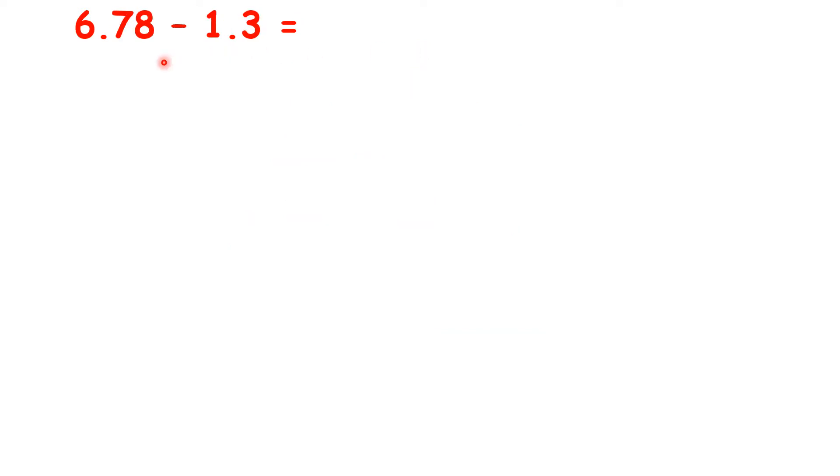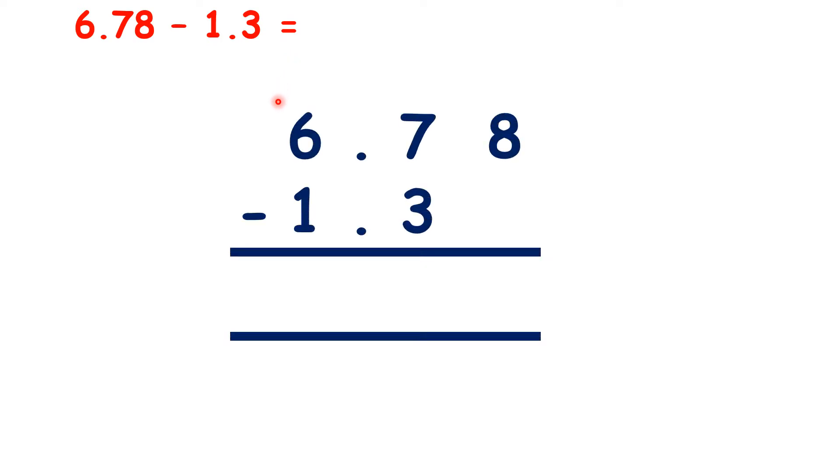Now pause the video and see if you can answer 6.78 minus 1.3. So first let's make things easier for ourselves by writing a 0 in our empty place value column and a decimal point in our answer, and now we can just subtract as normal to give us our answer 5.48.